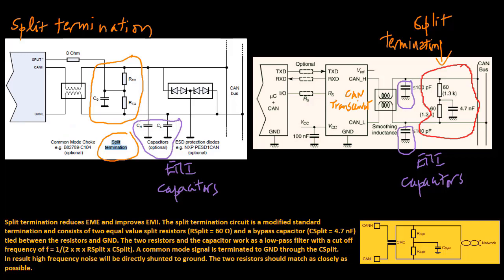Split termination reduces EME and improves EMI. The split termination circuit is a modified standard termination and consists of two equal value split resistors and a bypass capacitor tied between the resistors and ground. The two resistors and the capacitor work as a low pass filter. A common mode signal is terminated to ground through the C-split. In result high frequency noise will be directly shunted to ground.